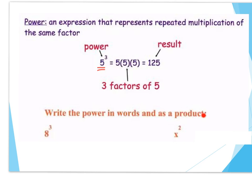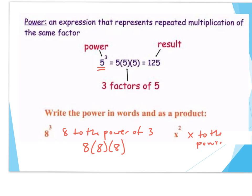Let's try some examples. I want you to write each power in words and then as a product. First: 8 to the power of 3. In words: eight to the power of three. As a product: 8 times 8 times 8 — three represents how many times I'm multiplying 8 together. Next: x to the power of 2. In words: x to the power of two. As a product: x times x. Notice I use a dot to represent multiplication. We can do this with both numbers and variables.